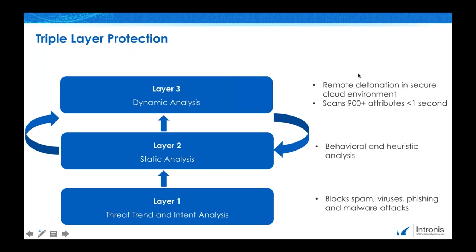Layer two is the Static Analysis layer, and this is where the processing machine learning farm works to identify different signatures and different trends and behaviors of different types of traffic. And then the third level is the Dynamic Analysis. This is where the sandboxing comes in — remote detonation in a secure cloud environment that scans 900 attributes in less than a second. The layer two traffic that's unknown is then pushed into layer three, allowing for this advanced threat protection.